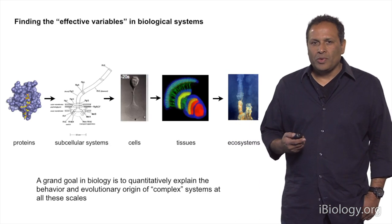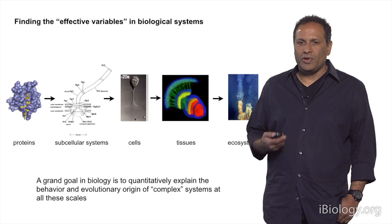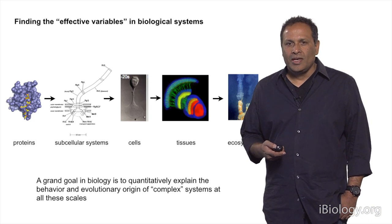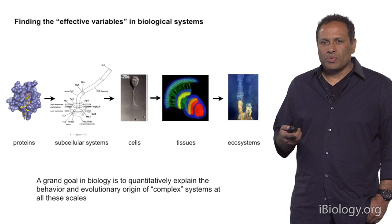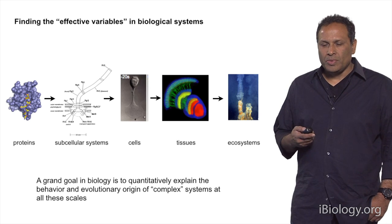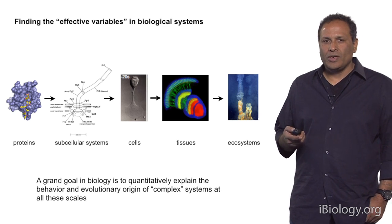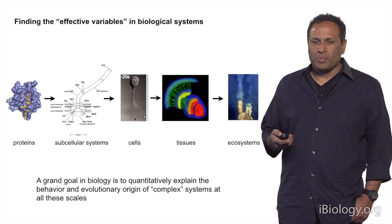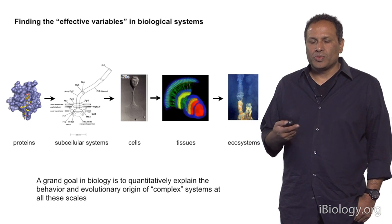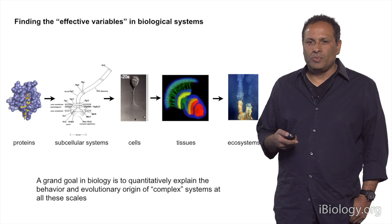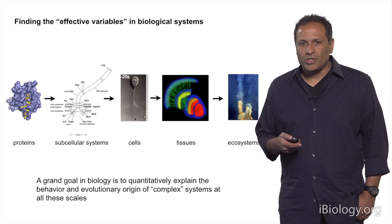The problem I would like to discuss is about finding the effective variables in biological systems. I'd like to describe the nature of this problem and tell you why finding these effective variables is both important but yet difficult. I'll propose an approach that leads to specific problems of interest to people coming from quantitative sciences into biology.